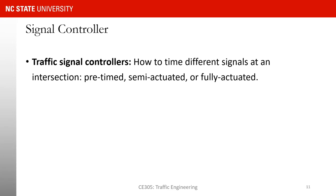On this slide I would like to talk about different types of controllers or control logics used at signalized intersections. There are three: pre-timed, semi-actuated, and fully actuated control. Pre-timed controllers have a fixed timing that can change from, say, morning peak to evening peak, but during each period the timing is fixed. If more vehicles arrive during that period the signal timing does not change, and if fewer vehicles arrive it still does not change.